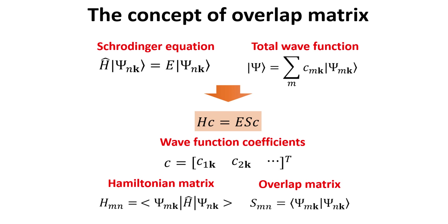Note that there is also an extra matrix, denoted by capital S, appearing on the right-hand side of the matrix equation. This matrix is referred to as the overlap matrix and its elements are the brackets of non-orthogonal Bloch states with distinct band indexes. The overlap matrix appears unavoidably in this formalism due to the non-orthogonality of Bloch states. If the Bloch states were orthogonal, the overlap matrix would be the identity matrix, and hence it would not appear in the Schrödinger equation in matrix form.